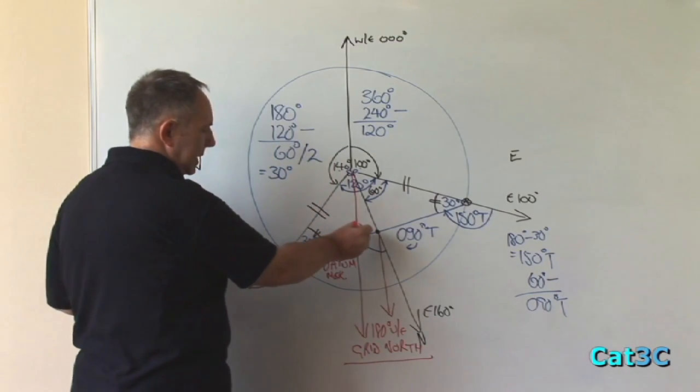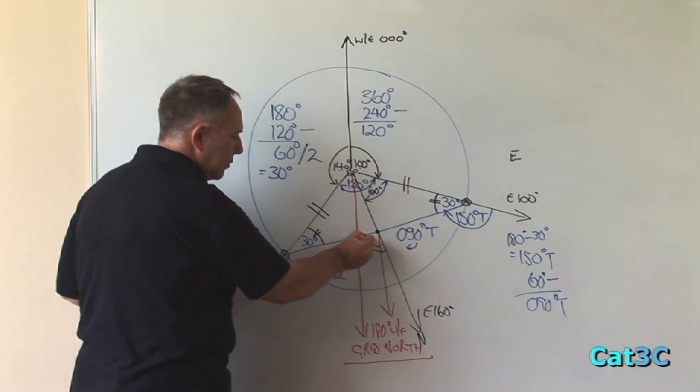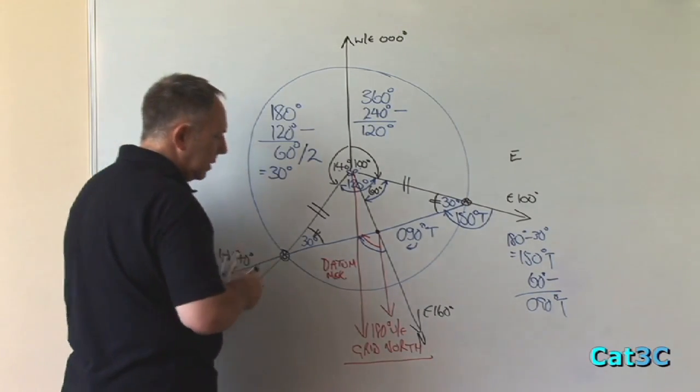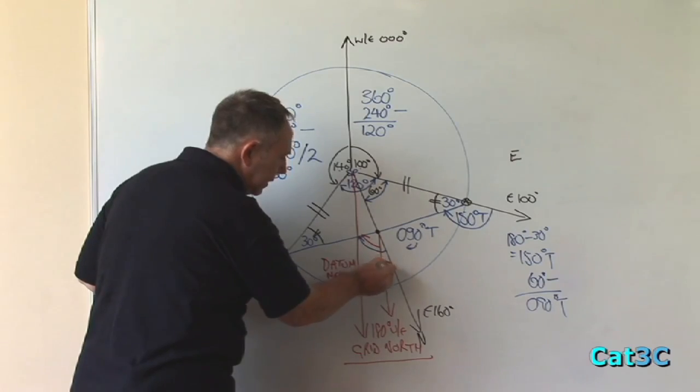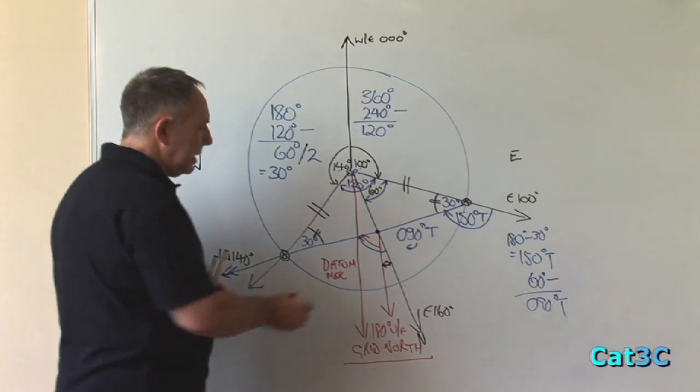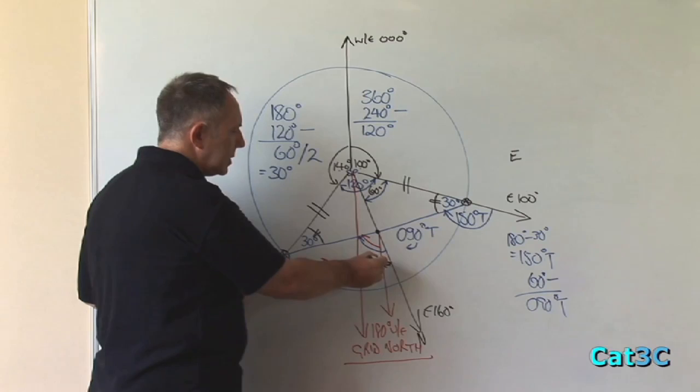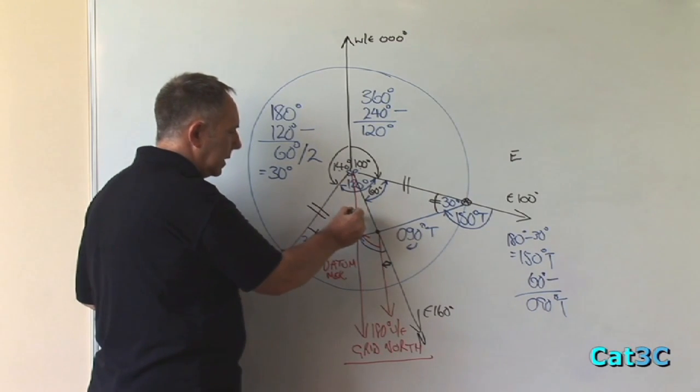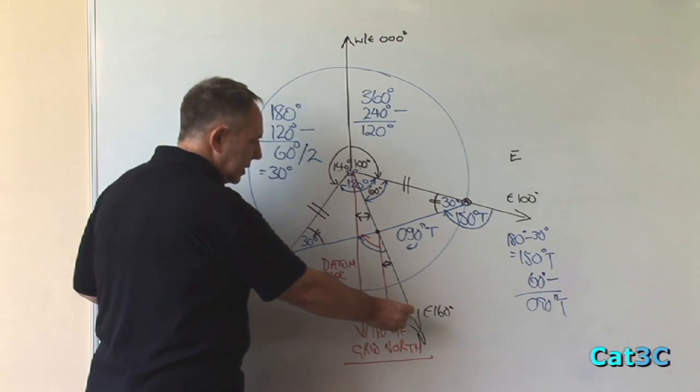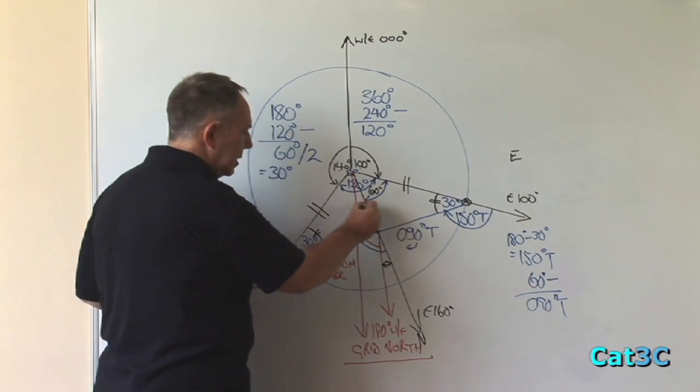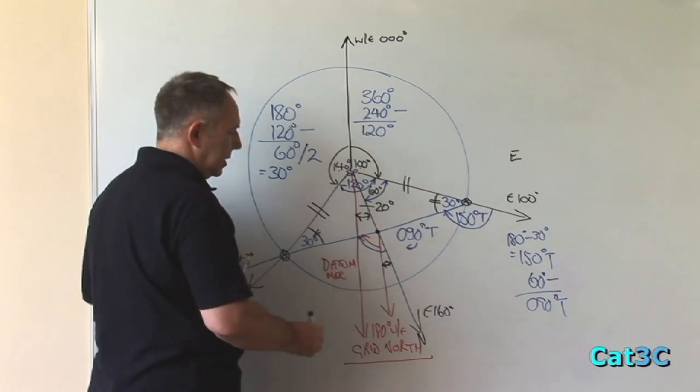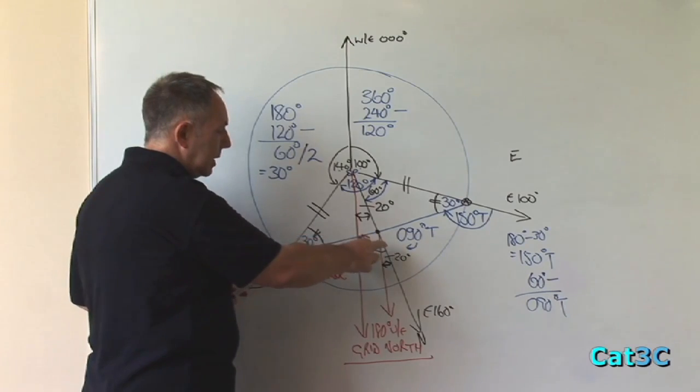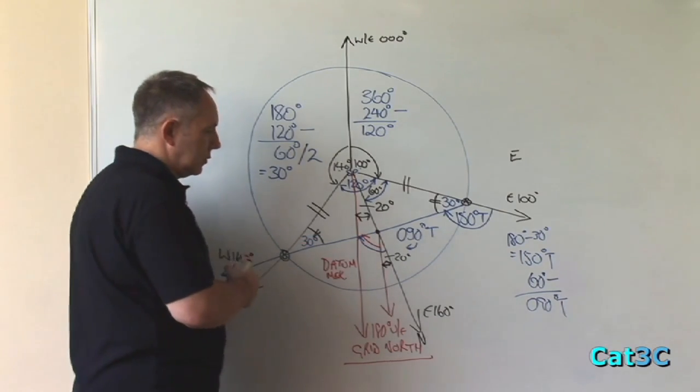We can see that at this point, the grid track is less than the true track. By what? By this angle. And that angle is equal to the change of longitude between the grid data meridian and the local meridian, which is 160 east to 180 east, or 20 degrees. Therefore, that position is 20 degrees there, which means that the grid track is 20 degrees smaller than the true track.